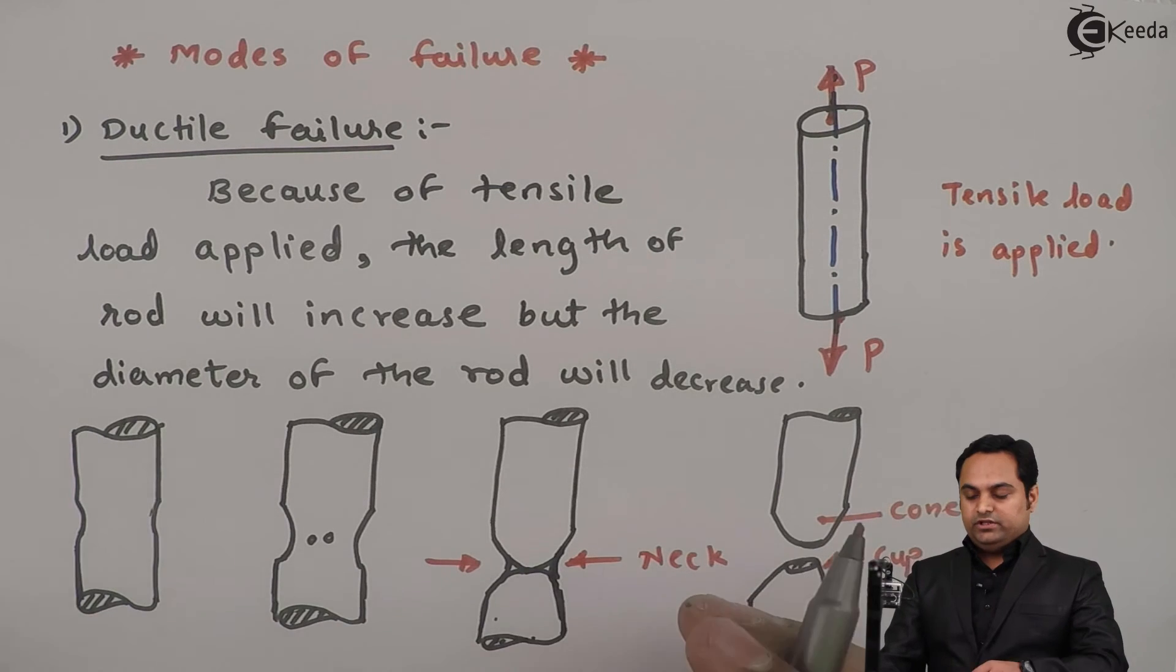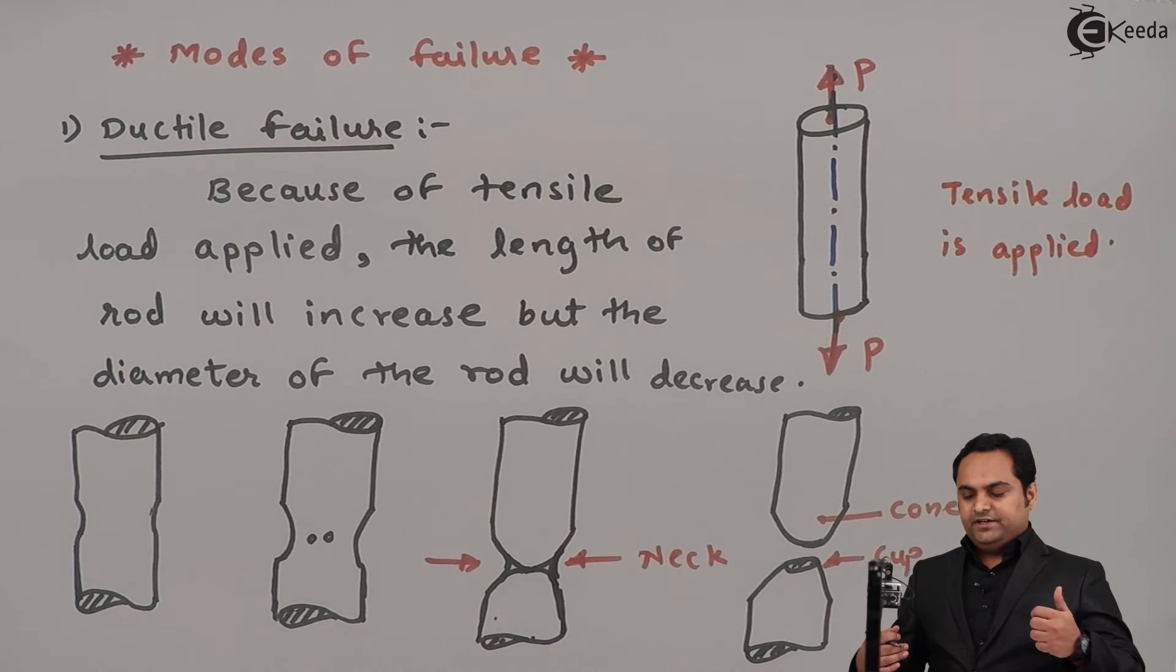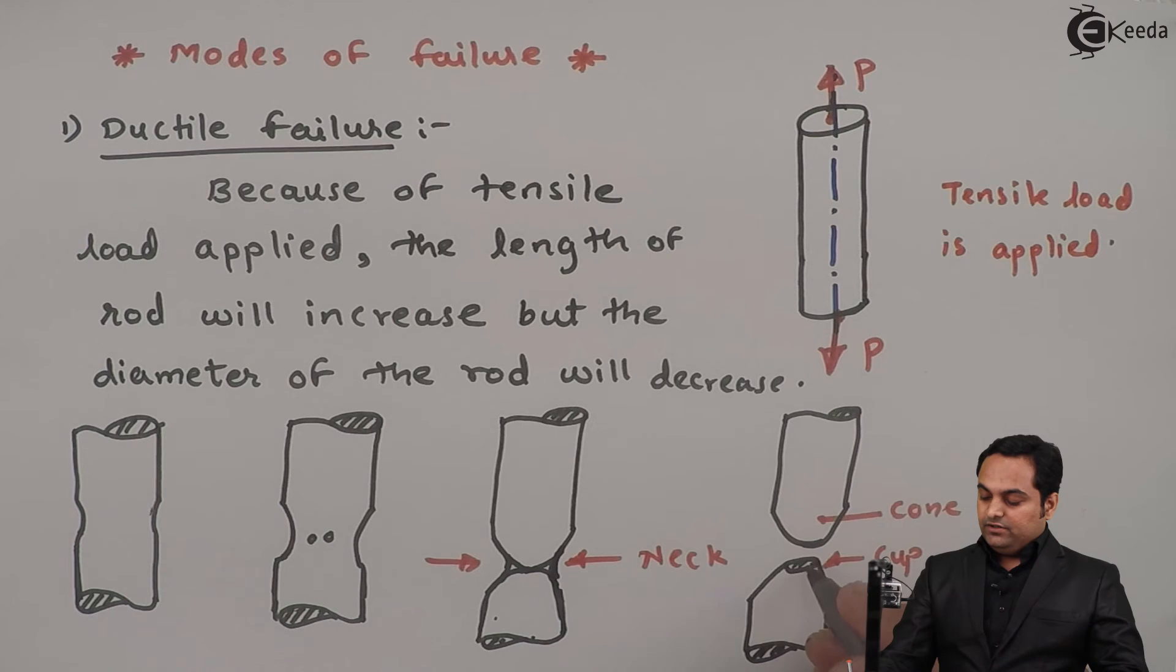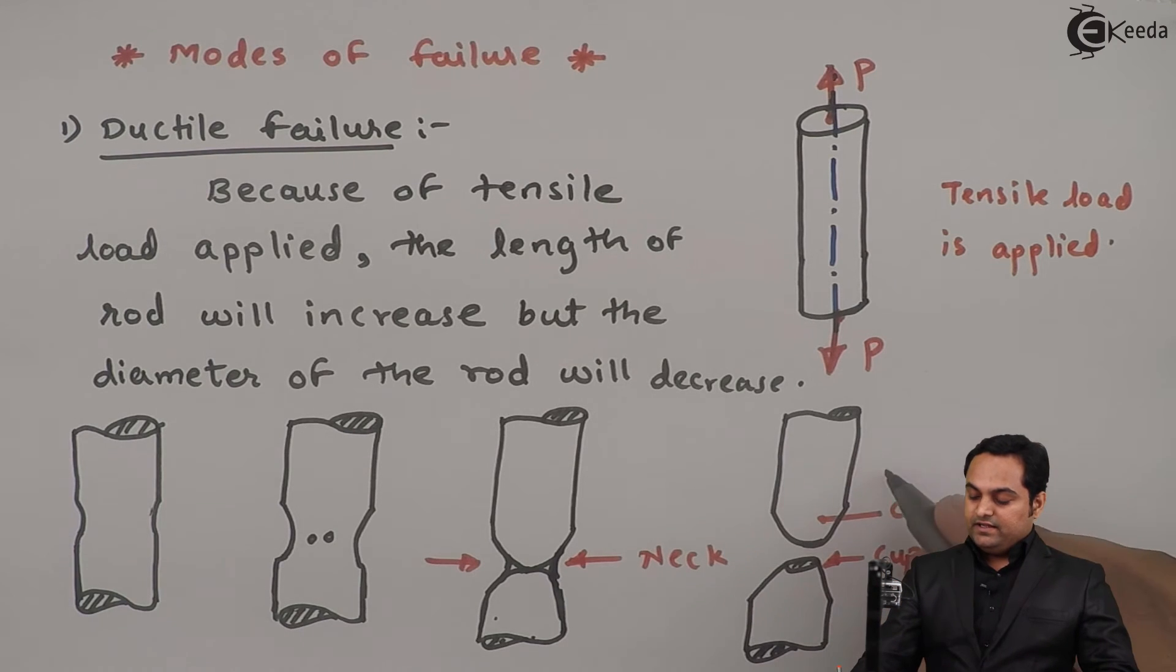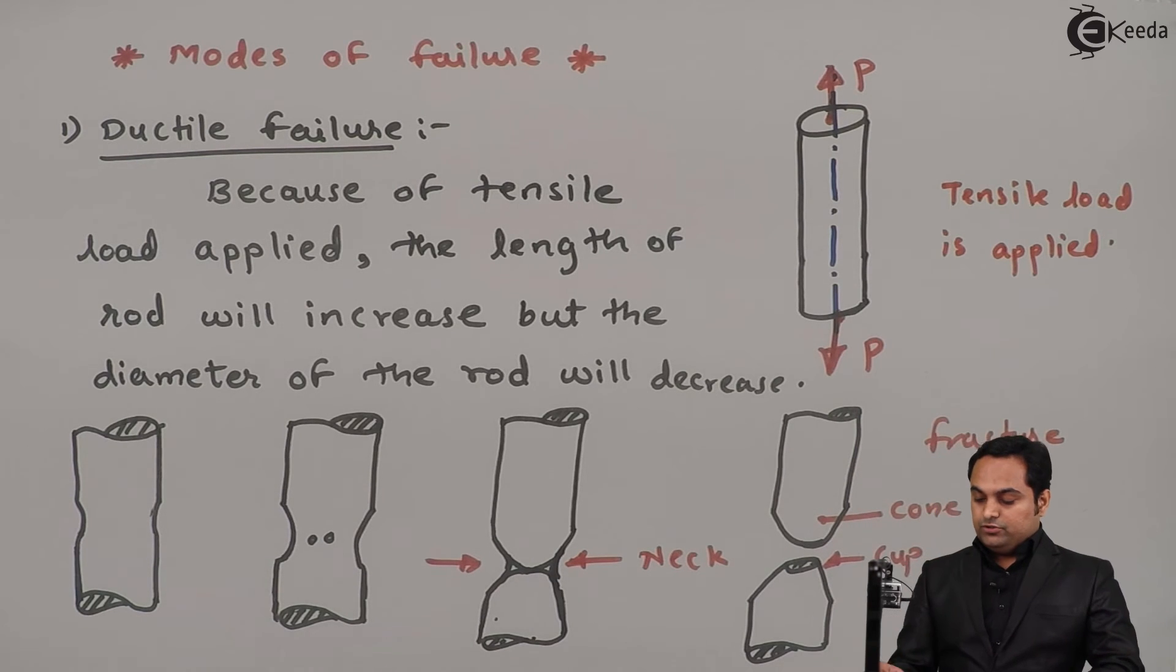When the load has been increased, this neck will break into two halves. This results in the fracture of the material forming cup and cone arrangement. So this is the ductile failure.